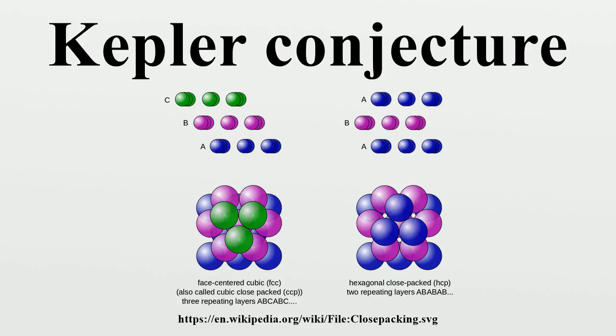Meanwhile, attempts were made to find an upper bound for the maximum density of any possible arrangement of spheres. English mathematician Claude Ambrose Rogers established an upper bound value of about 78%, and subsequent efforts by other mathematicians reduced this value slightly. But this was still much larger than the cubic close packing density of about 74%.